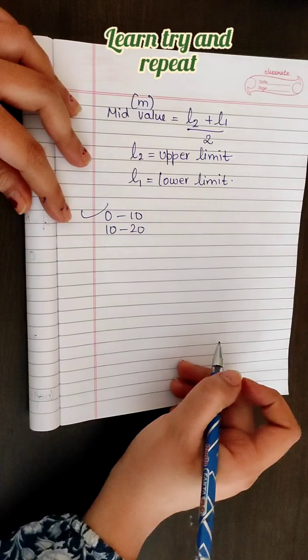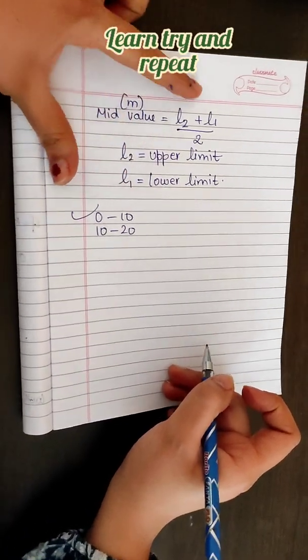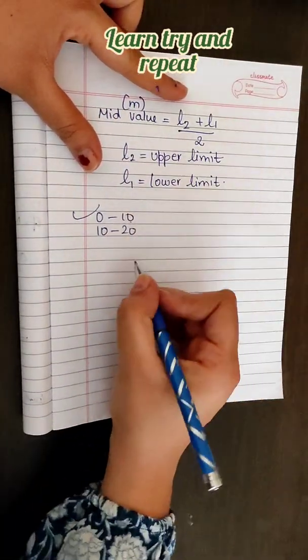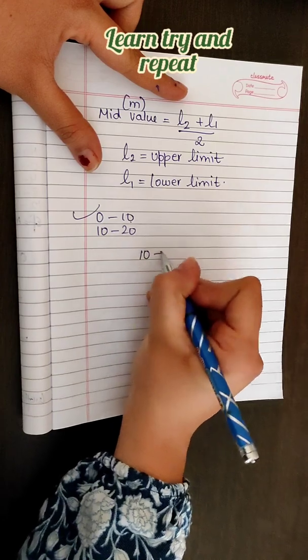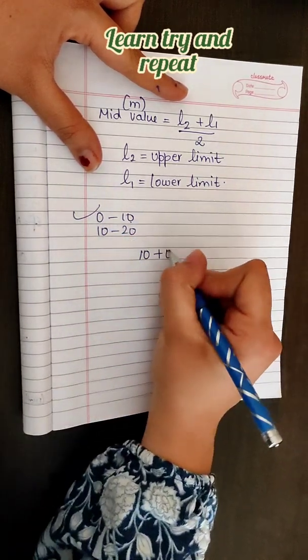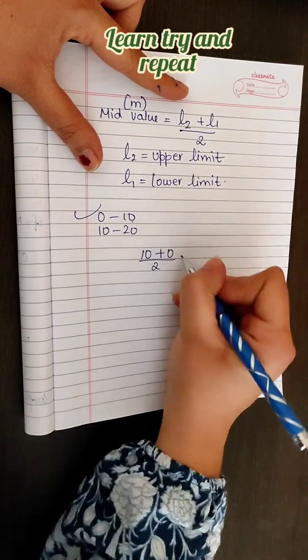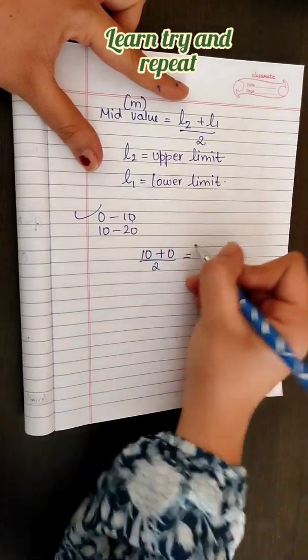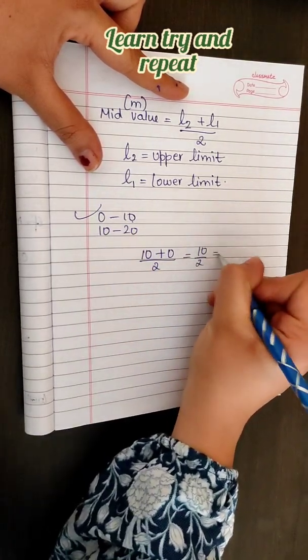In case of the first class interval, our upper limit is 10 and our lower limit is 0. So, 10 plus 0 divided by 2. 10 plus 0 is 10, and 10 divided by 2 is 5. So, our mid-value will be 5.